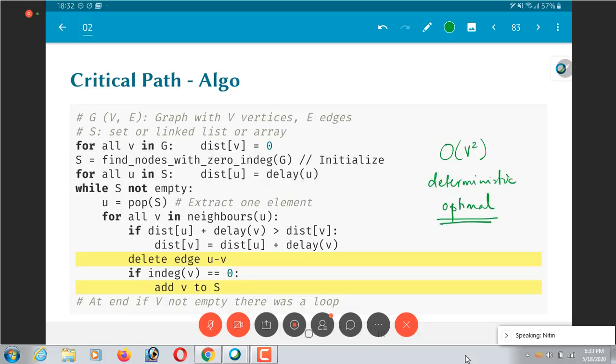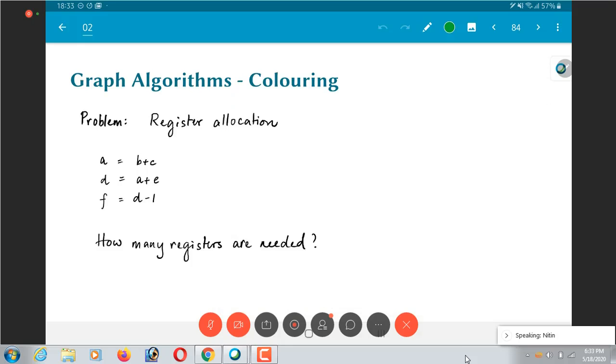Another example of an algorithm on graphs is thing called graph coloring. So why is graph coloring important? Let us take as an example a problem of register allocation.